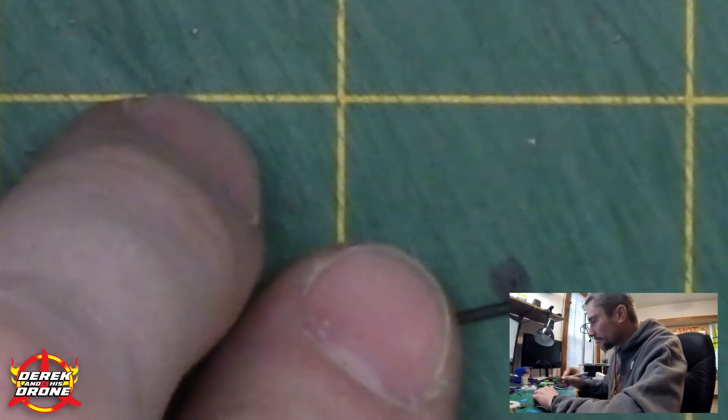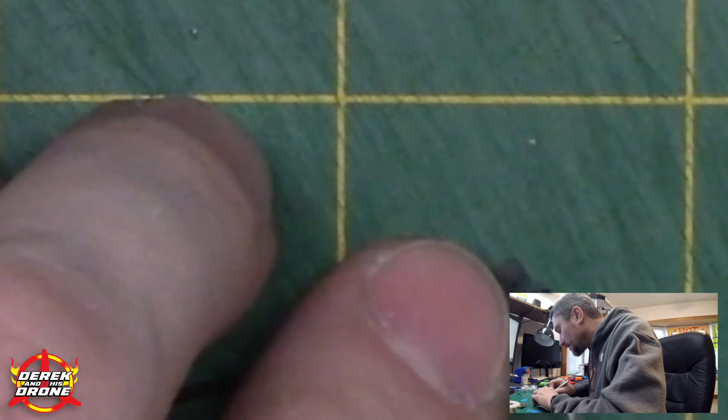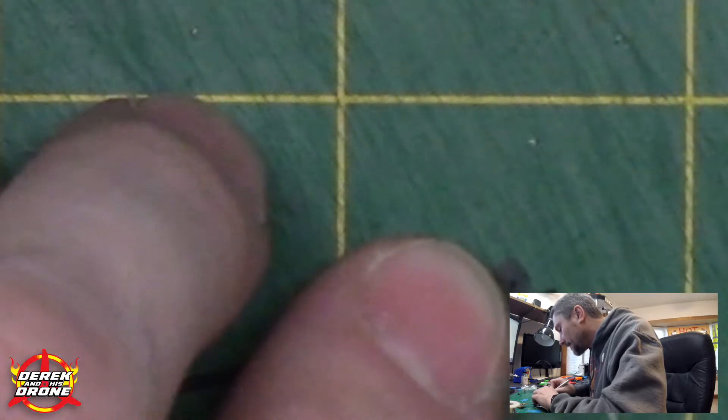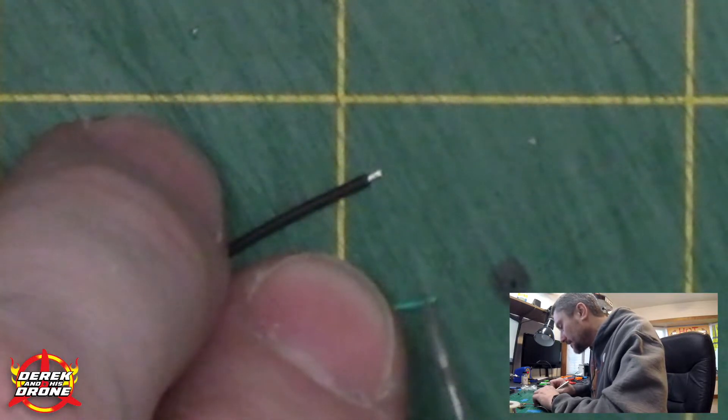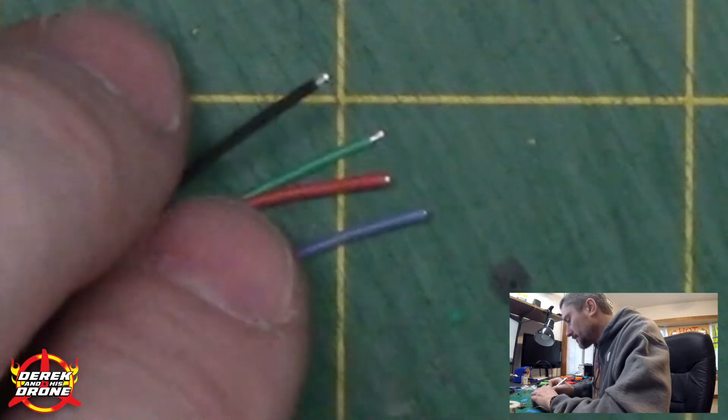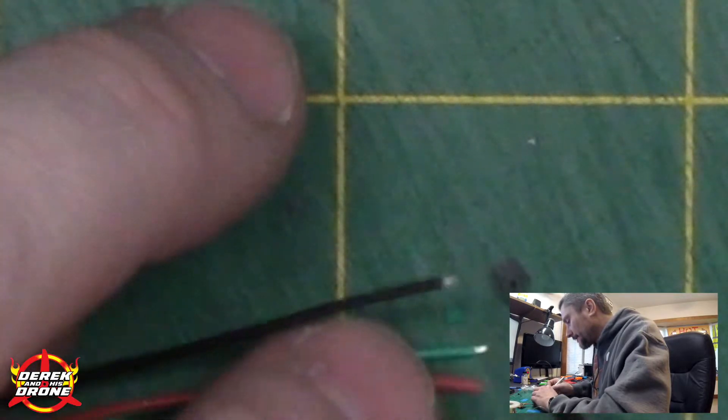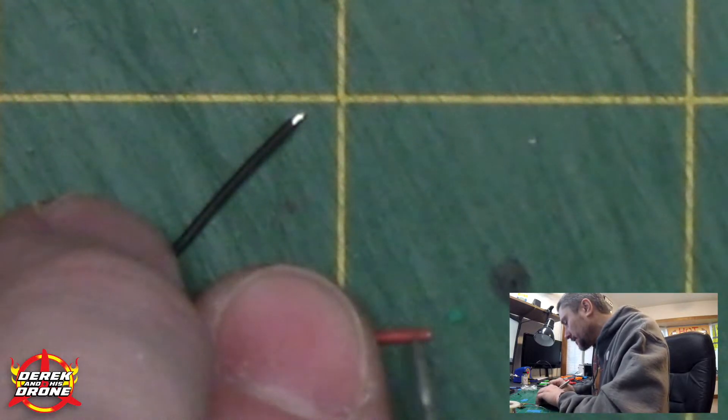Now this is key. Pay attention to this. You are going to hardly strip these wires. You should barely see the silver from the aluminum wire poking through. And the two that I've done so far are a little bit on the long side.